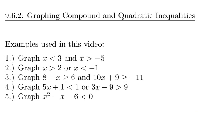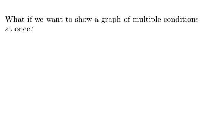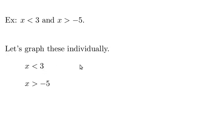Now we're going to talk about what if we want to show a graph of multiple conditions at once. For example, let's say we want to graph x is less than 3 and x is greater than negative 5. What we're doing is wanting to graph the place where both of these conditions are true. So first, let's graph these individually.